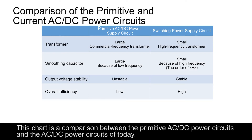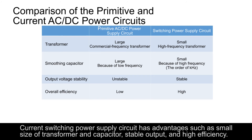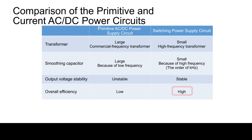This chart is a comparison between the primitive AC-DC power circuits and the AC-DC power circuits of today. The current switching power supply circuit has advantages such as small size of transformer and capacitor, stable output, and high efficiency. This concludes the explanation of the history of the DC power supply.